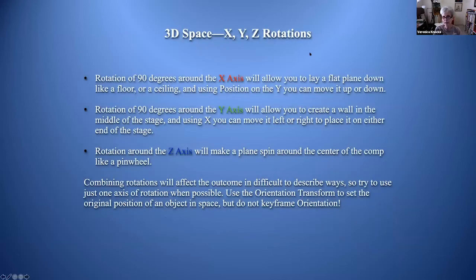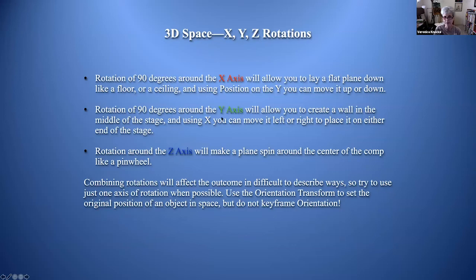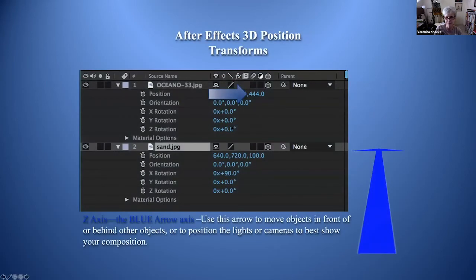In 3D space you have X, Y, and Z rotations. A rotation of 90 degrees around the X axis allows you to lay a flat plane down like a floor or ceiling, and using position on Y you can move it up or down. A rotation of 90 degrees on the Y axis lets you create a wall in the middle of the stage, and using X you can move it left or right.